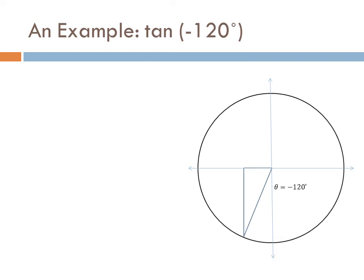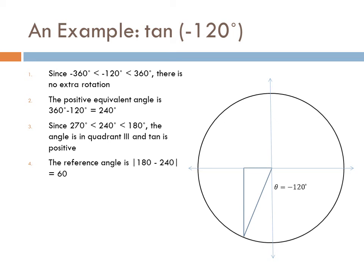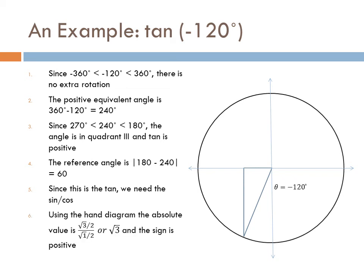Let's look at another example: the tangent of negative 120. We're still above negative 360, so no extra rotations. The positive equivalent angle is 360 minus 120, which is 240. Since we're between 180 and 270, we're in quadrant 3. Remembering 'all students take,' the tangent is positive. The reference angle is 60 degrees. Since this is a tangent, we need sine over cosine. Using the hand diagram, the absolute value is √3/2 divided by 1/2, which is just the square root of 3. The sign is positive.